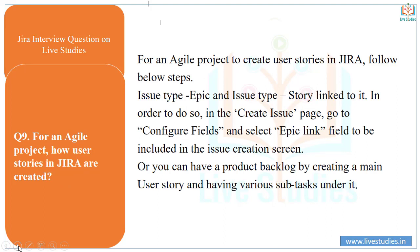The next question: how are user stories in Jira created? For an agile project, to create a story in Jira, you set the issue type to 'Story' and link it to an epic. In the Create Issue page, go to 'Configure Fields' and select the epic link field to include it on the issue creation screen. Alternatively, you can build a product backlog by creating a main user story and having various sub-tasks under it.